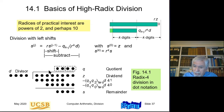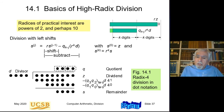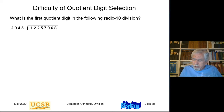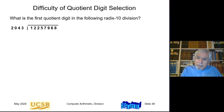This illustrates why quotient digit selection in non-binary cases can be difficult. In binary, because the quotient digit is either 0 or 1, we can just assume it's 1, do a trial subtraction, and if it works out, 1 was correct; if not, 0 is correct. In either case, we determine the next quotient bit using one subtraction.